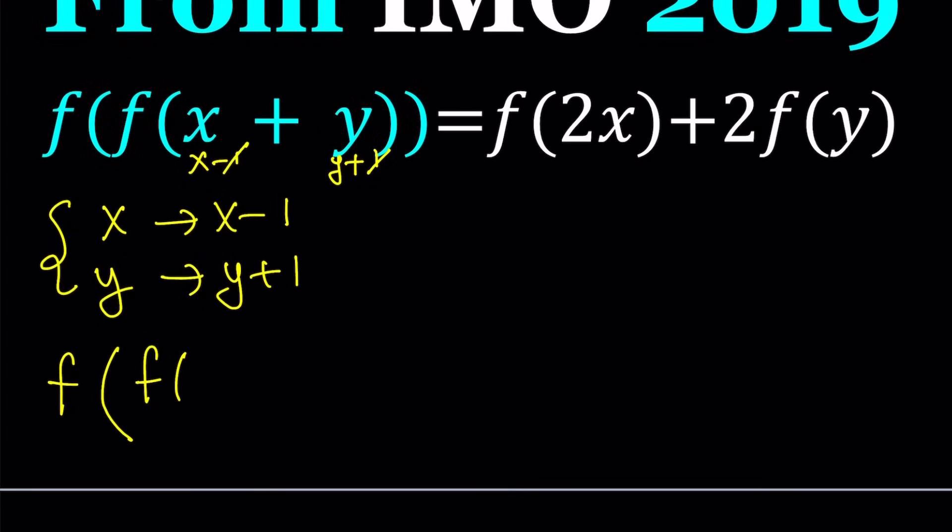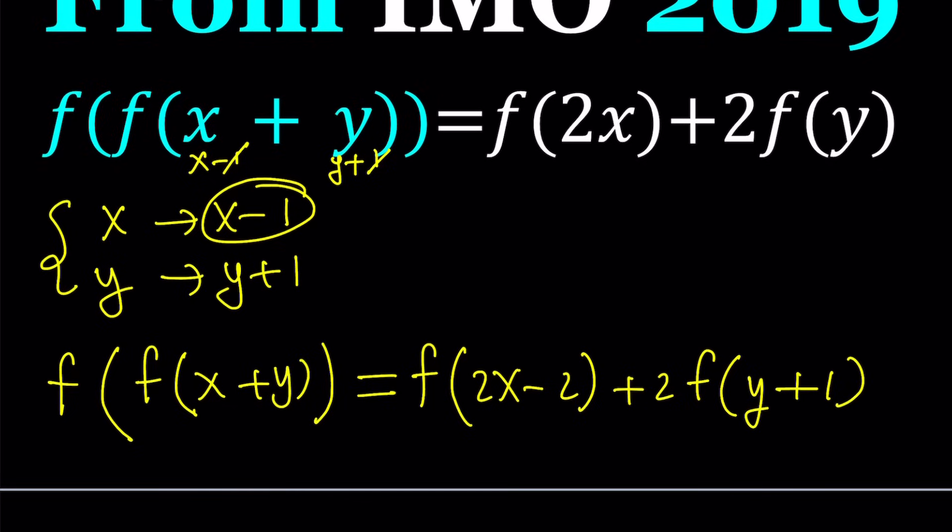But on the right-hand side, you have to replace x with this, so it's going to be 2x-2, and y will be replaced with y+1. Notice that when two things are equal to the same thing, then they are equal. So these two things must be equal.